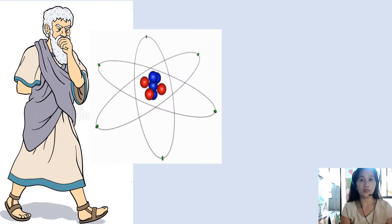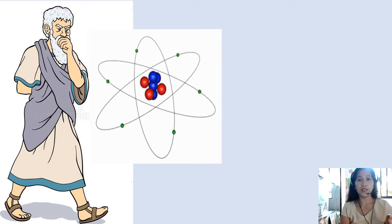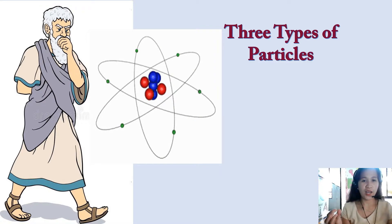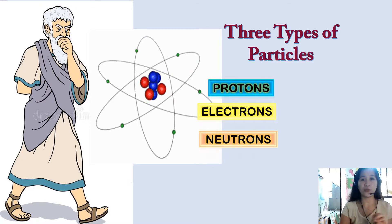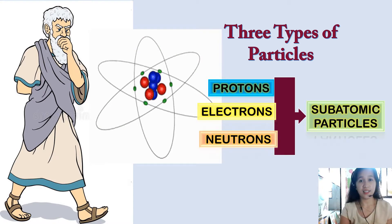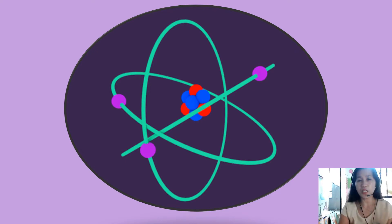Scientists collected evidence that atoms are composed of three types of particles: protons, electrons, and neutrons. These components of the atom are collectively referred to as the subatomic particles. In recent years, scientists have discovered that protons and neutrons consist of even smaller particles, and there are still many things about the atom that scientists are discovering.